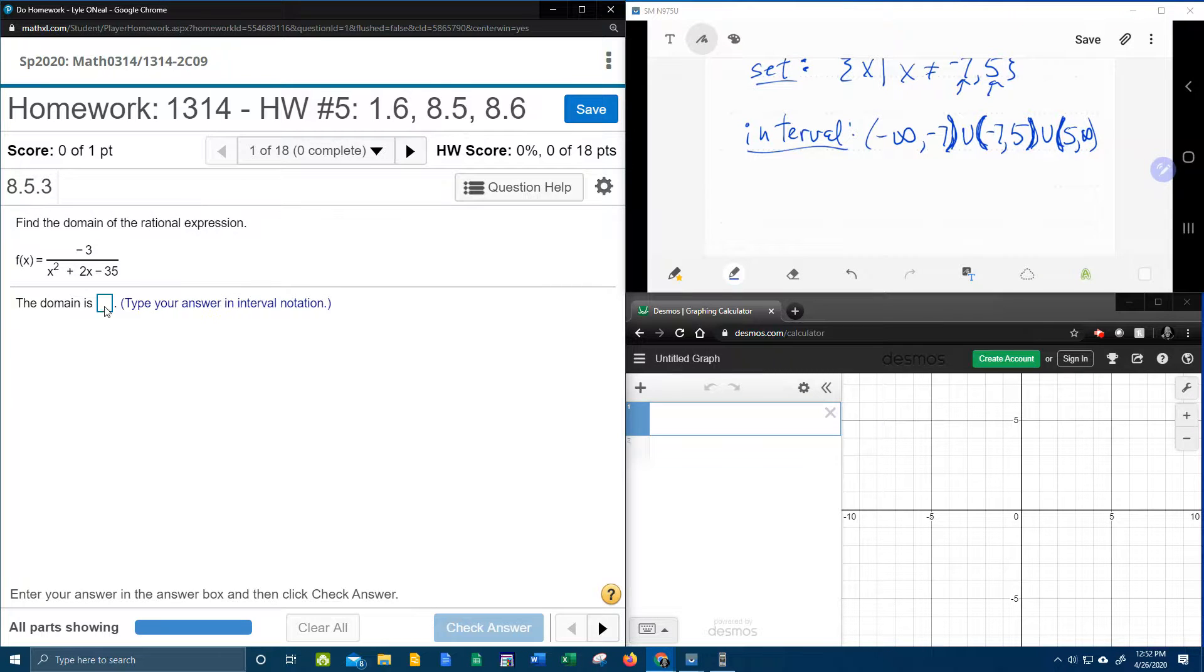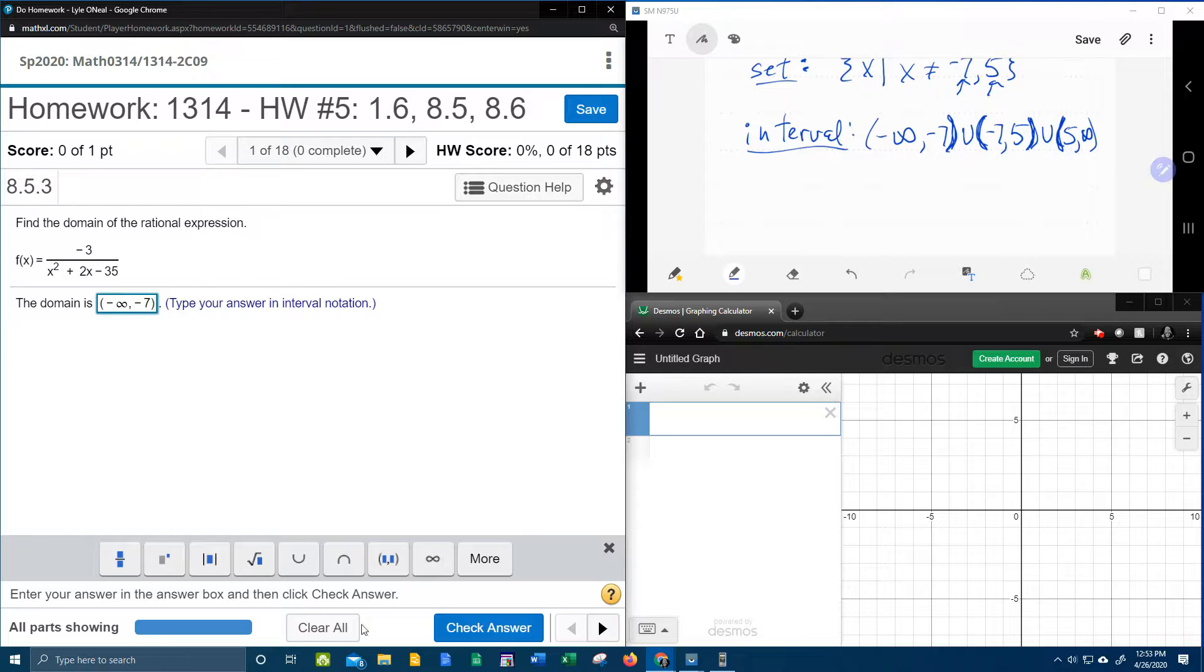And so let's put that into MyLabMath and see if that's anywhere close. Negative infinity to negative 7. We need the union because the U is the glue that sticks the two pieces together. And then everything from 5 to infinity.